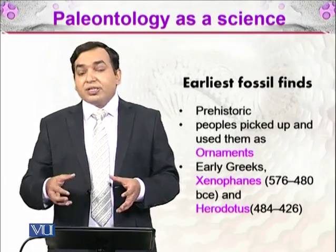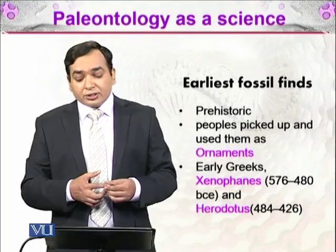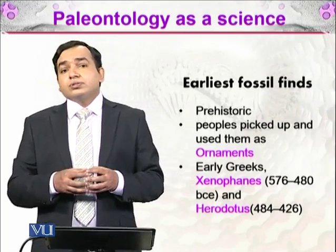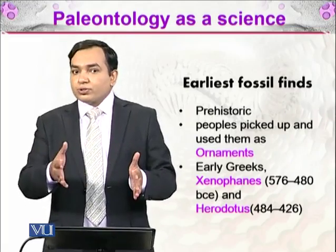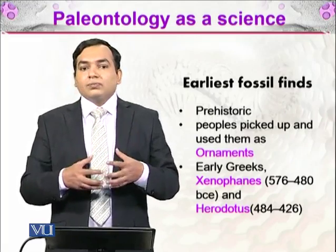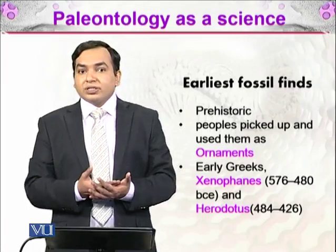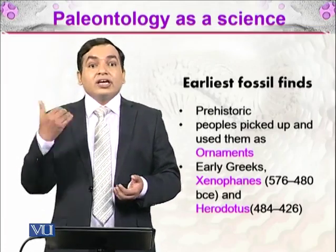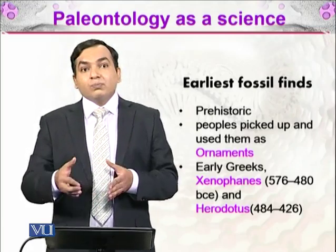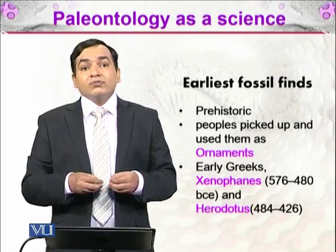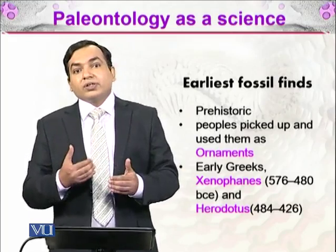Prehistoric people picked up fossils and used them as ornaments — as jewelry. The earliest Greeks, specifically Xenophanes and Herodotus, were two very knowledgeable philosophers. They observed fossils on the surface of the earth that resembled organisms living in the sea, and concluded that these places were actually seas in ancient times. This was a very calculated and informed point of view, and it is fascinating how they speculated about the conditions surrounding these organisms.